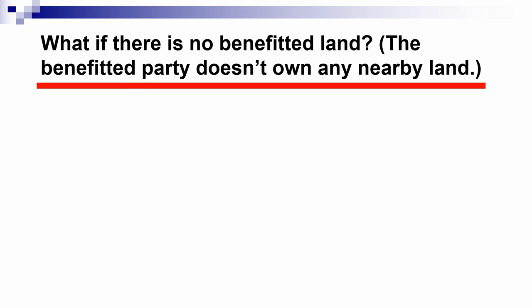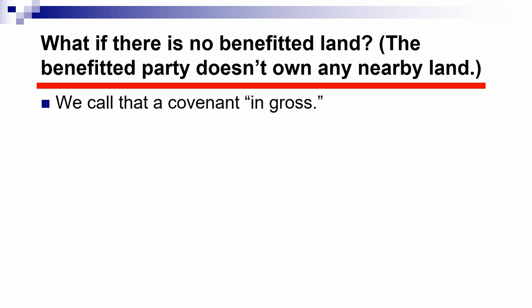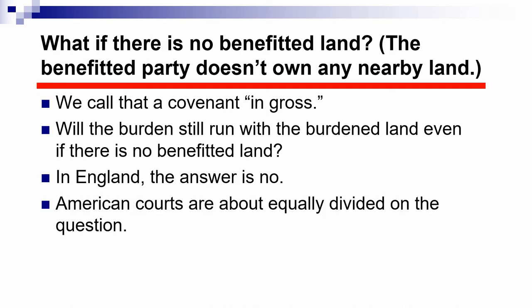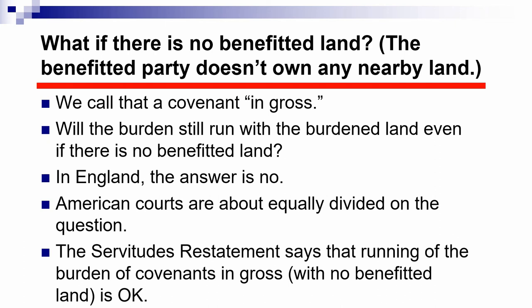Suppose there isn't any benefited land — the benefited party is a person or entity like a corporation or LLC, but they don't own any nearby land. There can still be a valid covenant; we call that a covenant in gross. The term 'in gross' means a covenant that doesn't have any specific benefited land. Whether the burden will still run with the burdened land is a question on which courts have split. The American courts are about equally divided, though the Restatement of Servitudes says running of the burden is perfectly fine even if the covenant is in gross.